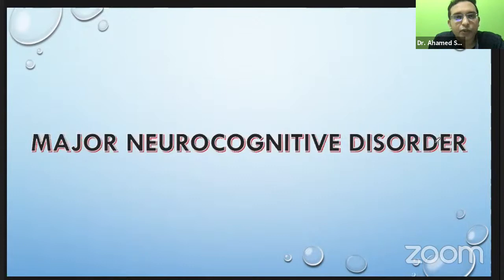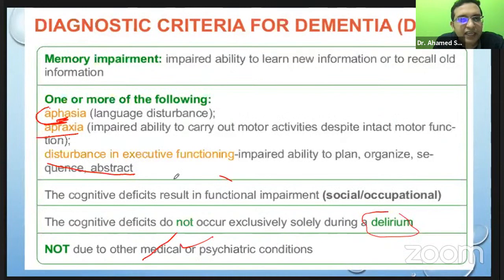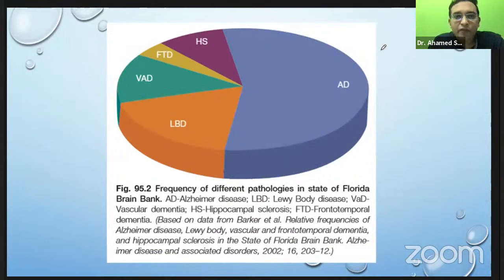Clinically, the term now used is major neurocognitive disorder. There is memory impairment along with at least one more area being affected — either aphasia or disturbance in executive function — which cannot be explained by delirium or any psychiatric or medical issues, and which definitely affects activities of daily living including social and occupational functioning. The most common degenerative disease causing dementia is Alzheimer's disease, followed by dementia with Lewy bodies as the second most common, then vascular cognitive impairment, then frontotemporal dementia (FTD).